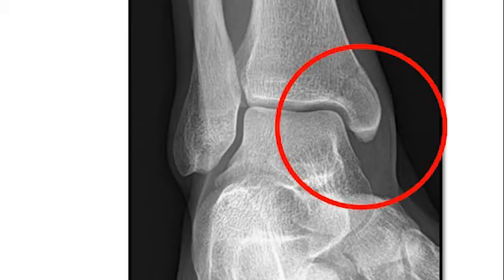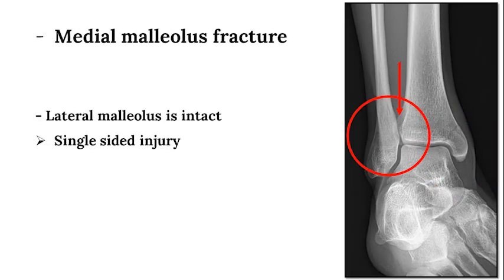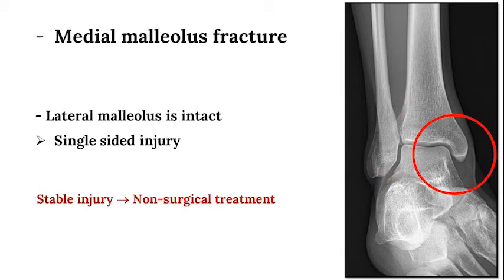This radiograph demonstrates a medial malleolus fracture; the lateral side of this ankle is uninjured. There is no fracture, and the tibiofibular overlap and clear space indicate a stable syndesmosis. Therefore, given the medial-sided injury only, this is a stable injury and can often be treated without surgery.